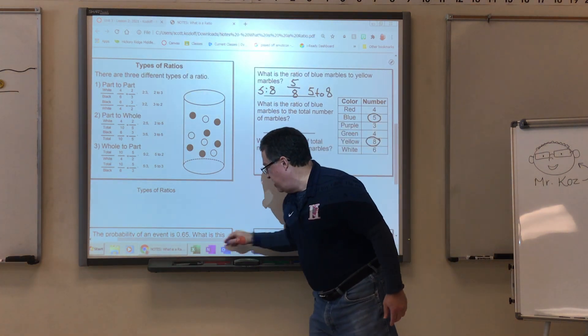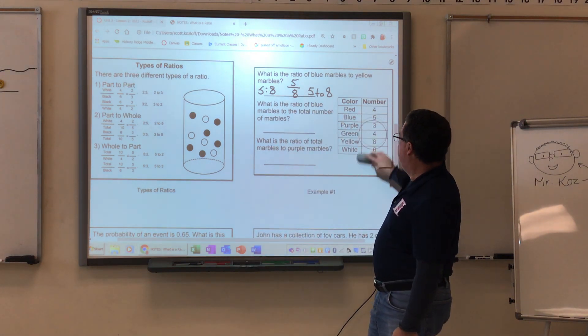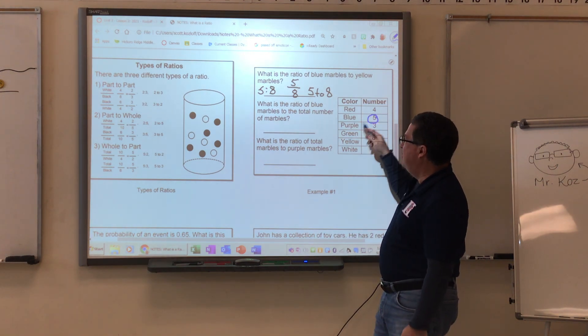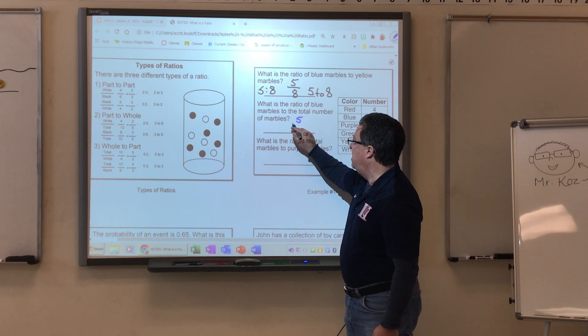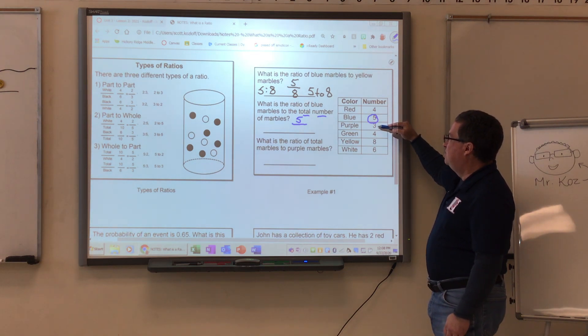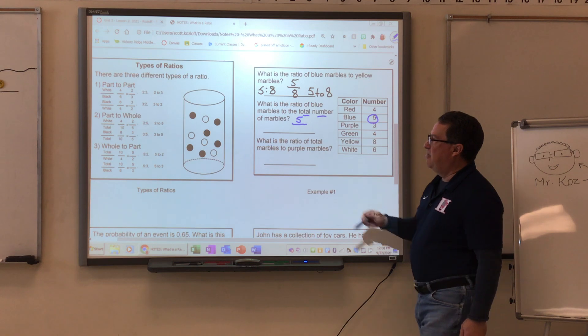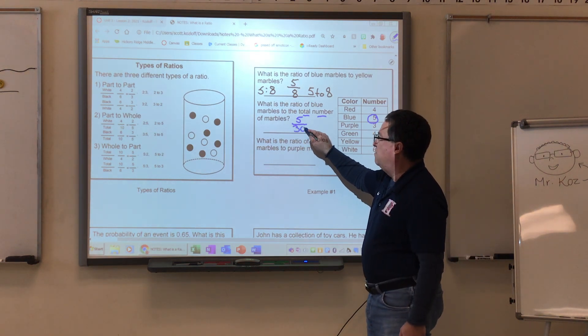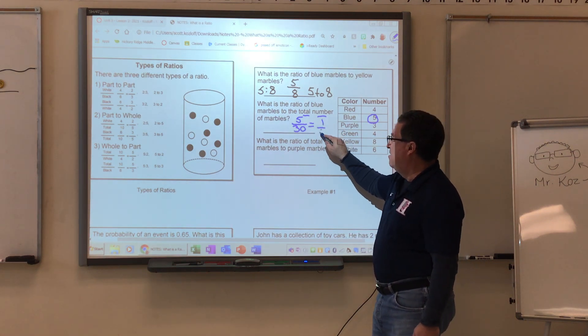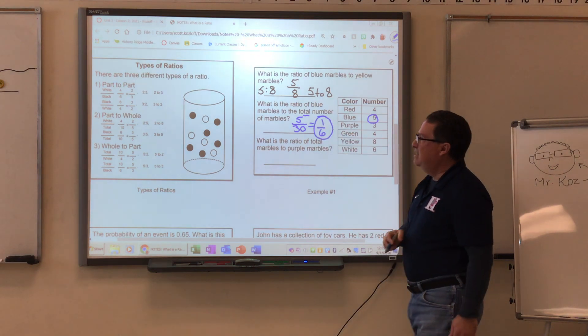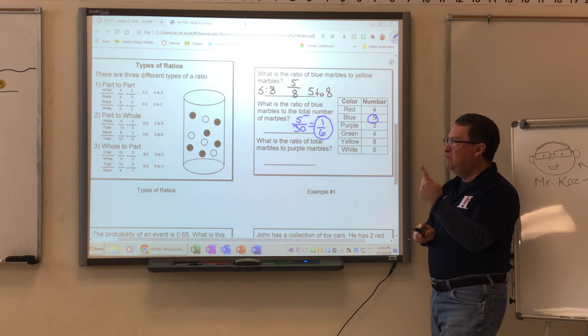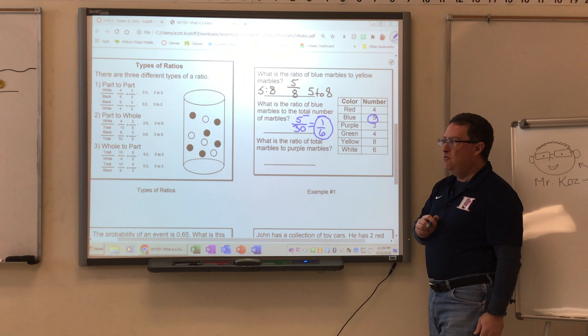The second question says, what is the ratio of blue marbles to the total number of marbles? Now we know that the blue marbles is 5. So I know that the top or numerator will be a 5. And now I have to find the total marbles. 9 plus 3 is 12. 12 plus 8 is 20. 20 plus 10 is 30. So if I have 5 over 30, then I know that I can divide both of these by 5. And my correct answer would be 1 to 6. So the ratio of blue marbles to total marbles is one blue marble for every six total marbles.